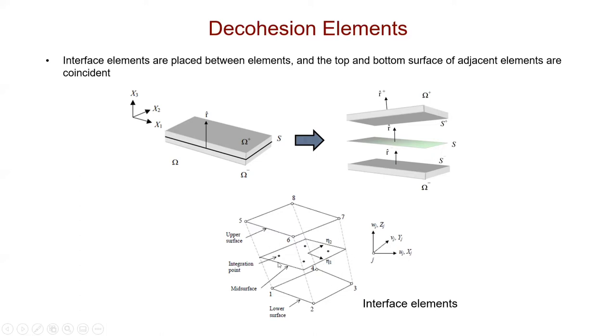This layer of interface elements is really comprised of an upper surface and lower surface with eight nodes: 1, 2, 3, 4 for the bottom surface, 5, 6, 7, 8 for the top surface. These two surfaces are initially coincident to simulate the fact that these two blocks are bonded together or infinitely stuck together.